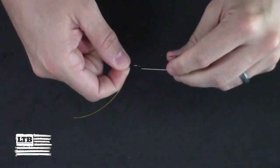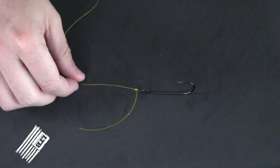Then we snip off our tag end and that is your clinch knot. Congratulations and tight lines.